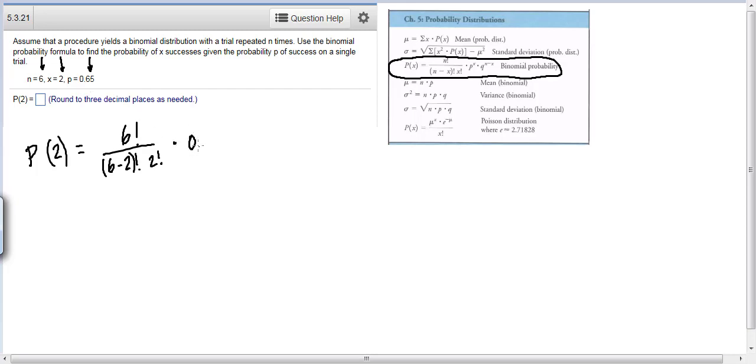Now, P is 0.65. We're going to raise that to the x power, which is 2. And then we have this letter Q. Now, you need to know that Q is equal to 1 minus P. It's basically the probability of failure. 0.65 is the probability of success, so 0.35 is the probability of failure. In other words, if there's a 65% chance of rain, there's a 35% chance that it won't rain. And then we do n minus x, so we do 6 minus 2 for 4.